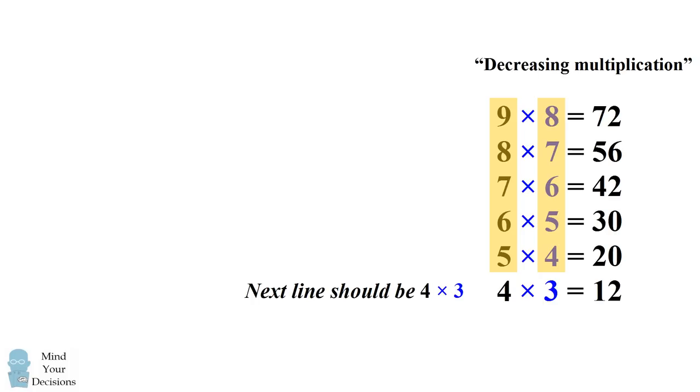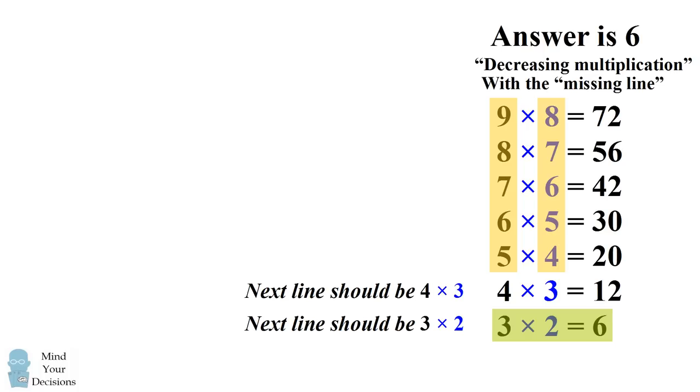If we continue this pattern the first number will be 1 less and the second number will be 1 less. So the next line would be 3 times 2. And once again 3 times 2 equals 6. So we again have the answer being equal to 6. This is even true under the decreasing multiplication method as long as we include the missing line of 4 times 3 equals 12.